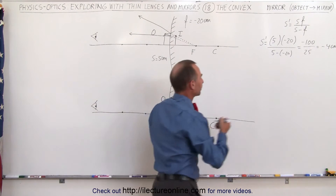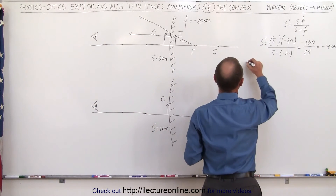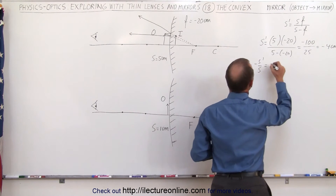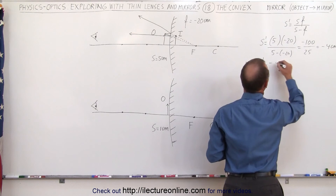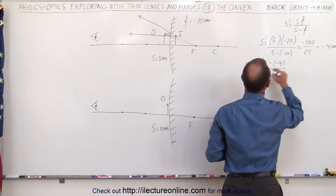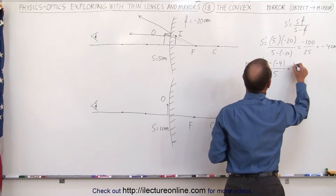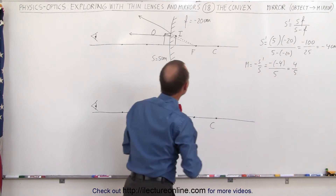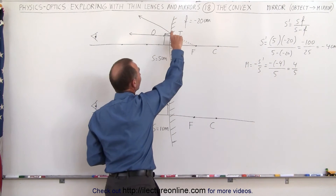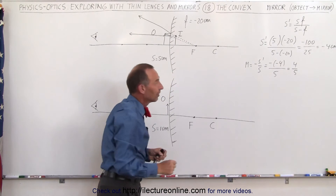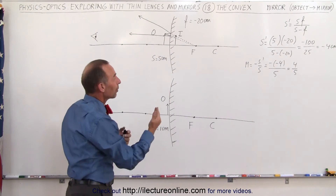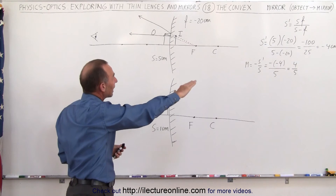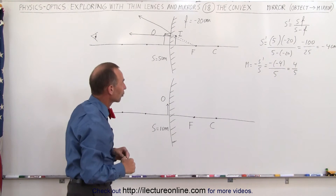How about the magnification? The magnification equals minus S prime over S, which is minus a minus 4, divided by 5, which is 4 fifths. That means the image height is 4 fifths the height of the object. The positive value means it's upright, and the negative image distance means it's behind the mirror — therefore a virtual image.